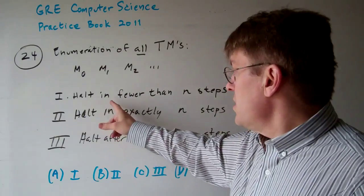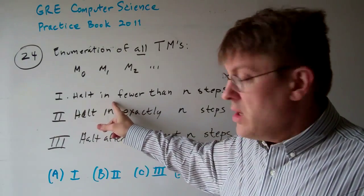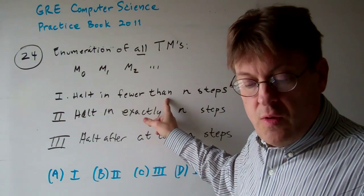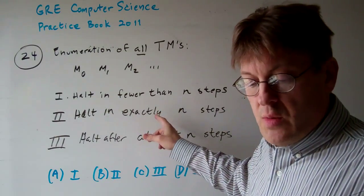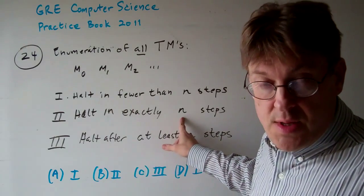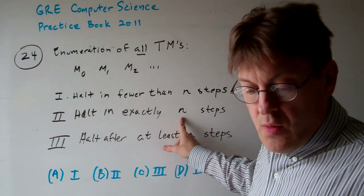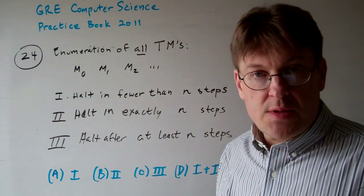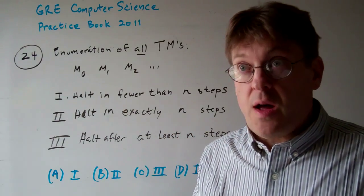Now, the first one is, will a given machine halt in fewer than n steps? Number two is, given a machine, will it halt in exactly n steps? And number three, will it halt after at least n steps? This is the famous halting problem.